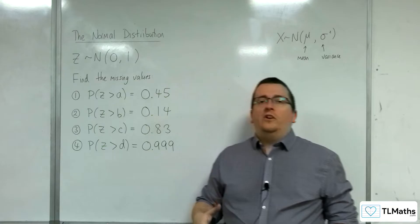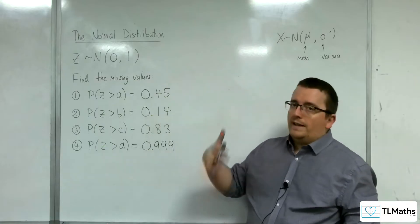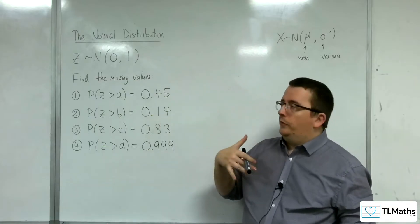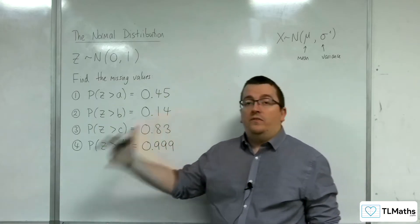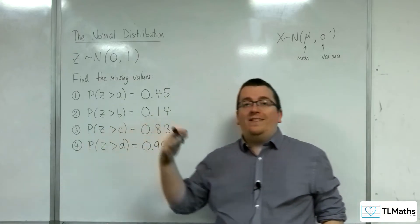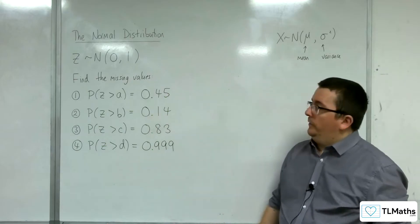We're going to do some more examples of working backwards — given the probabilities, finding the values of z using the tables.